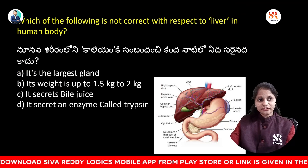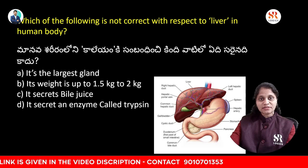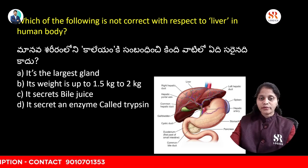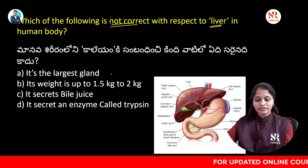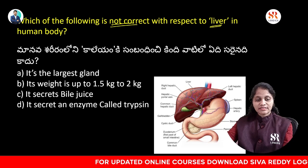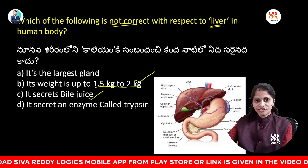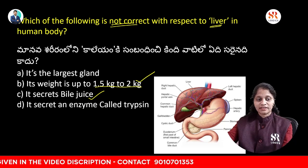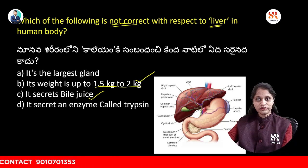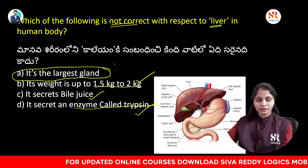Which of the following is not correct with respect to the liver in the human body? The liver is the largest gland, it weighs up to 1.5 to 2 kilograms, and it secretes digestive juices. It also secretes an enzyme called trypsin. The incorrect statement here is that liver is not actually the largest gland.